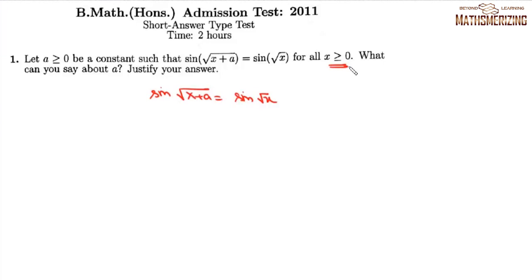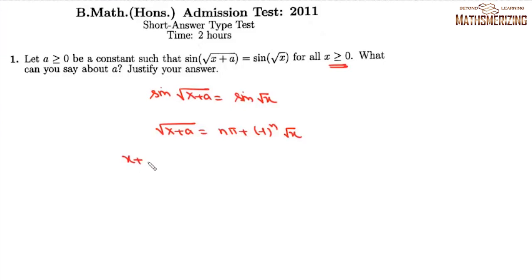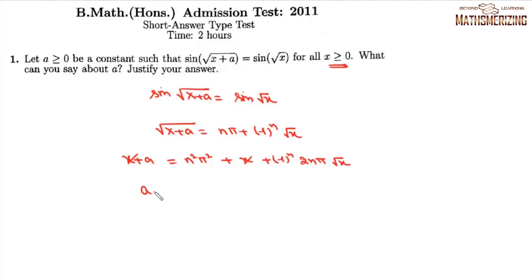Since sin θ = sin α, we write its general solution: √(x+a) = nπ + (−1)^n √x. Now we square both sides to get x + a = n²π² + x + (−1)^n · 2nπ · √x.